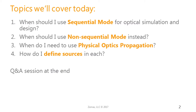We get a lot of tough questions here at Technical Support, and they're often caused by selecting the wrong UI mode in the very beginning. So today we're going to talk about each of these modes and when they should be used. We'll start with sequential mode, then non-sequential mode, then briefly cover when physical optics propagation is needed. For each mode we'll talk about how to define sources, as it's very different depending on the mode selected. At the very end we'll have a Q&A session.